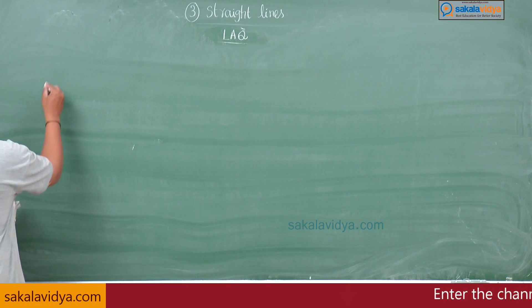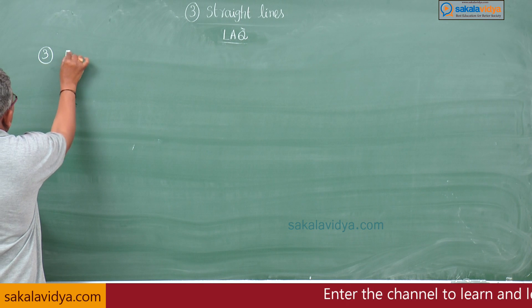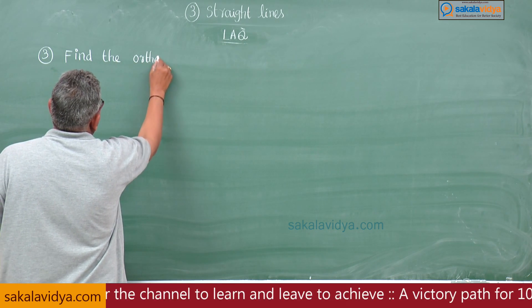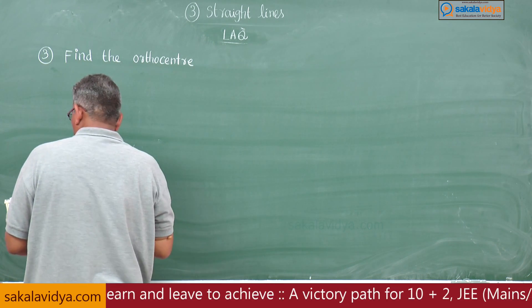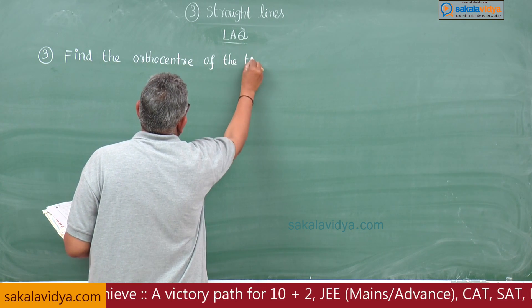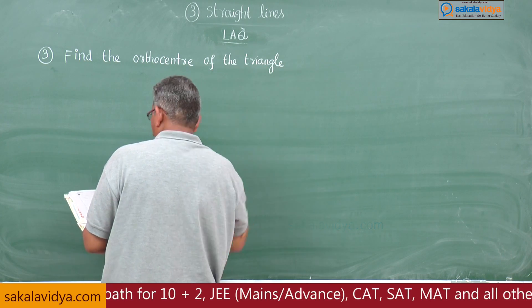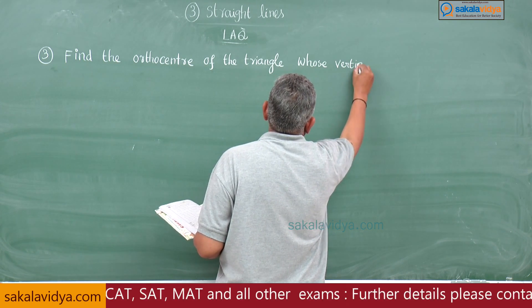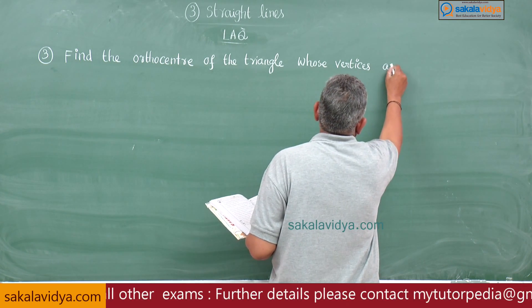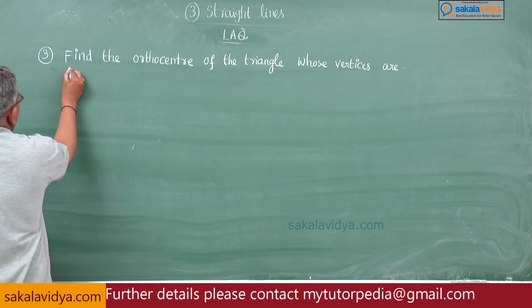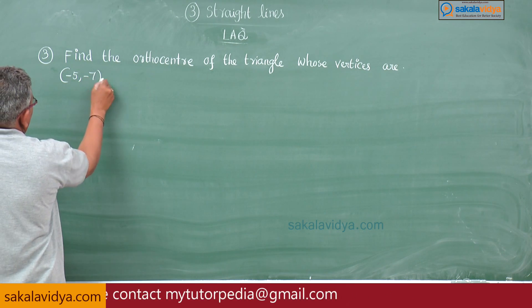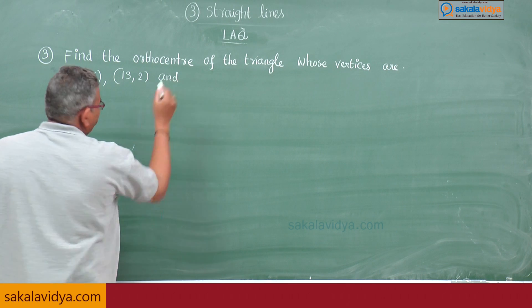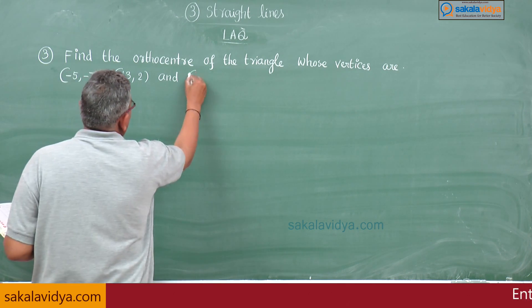Third question. Find the orthocenter of the triangle whose vertices are minus 5 comma minus 7, 13 comma 2, and minus 5 comma 6.